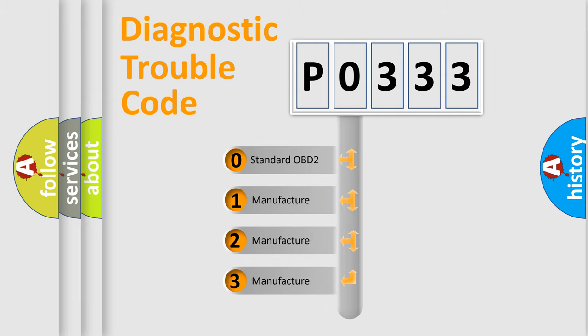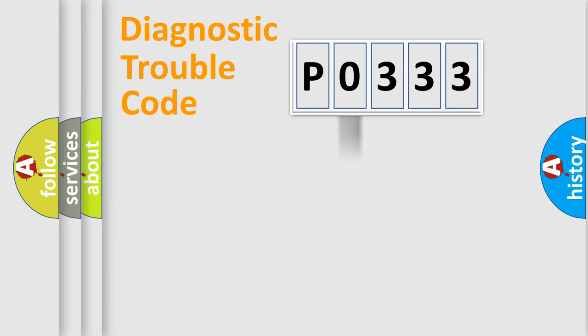If the second character is expressed as zero, it is a standardized error. In the case of numbers 1, 2, 3, it is a manufacturer-specific expression of the car-specific error.